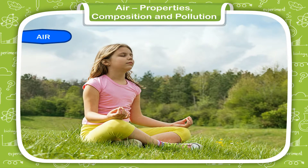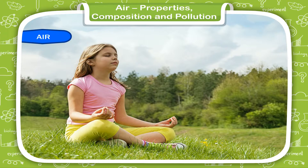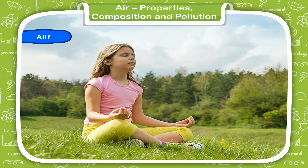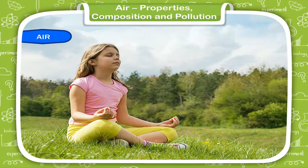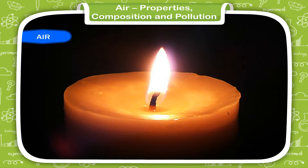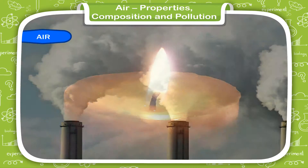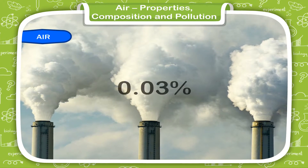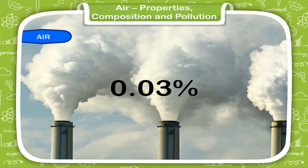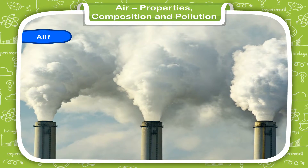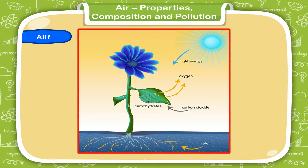Out of all these gases, oxygen is the most important as it is required by all living beings for breathing. Oxygen is also needed for burning. Next comes carbon dioxide. Though there is only 0.03% of carbon dioxide in air, it is the gas that helps plants to make their food by the process of photosynthesis.